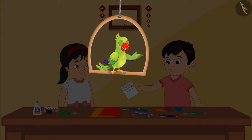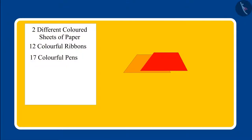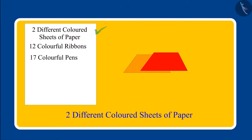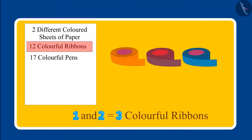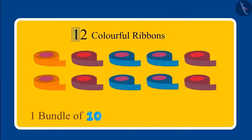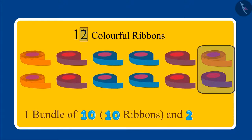Children, out of Pinky and Chotu, who do you think is correct? Let's see. First, two sheets of paper is written in the list, which Chotu brought correctly. Below that, one and two is written — but that means twelve, not three. Chotu added one and two, but we don't read the number that way. Here, one means one bundle of ten.